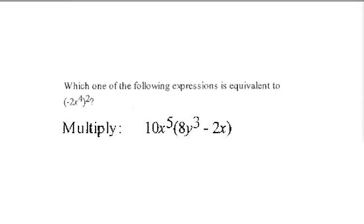In the first one, we have minus 2x to the fourth to the second power, and they're asking us to simplify that. In the next one, if you can't read it, it's 10x to the fifth times 8y to the third minus 2x. So that's the second question we're going to go over.